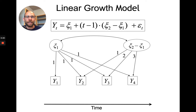Some people may not change at all and have a slope factor score of zero; some might have increases in their IQ scores with a positive slope score; others might show a decline with a negative slope factor score. This variability in slope scores is reflected in the variance we estimate for the slope factor.